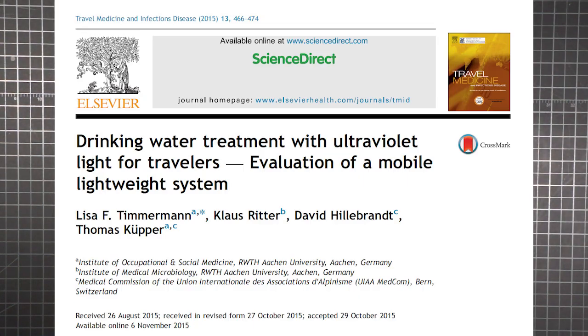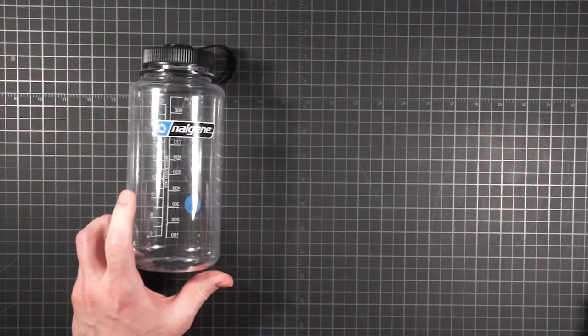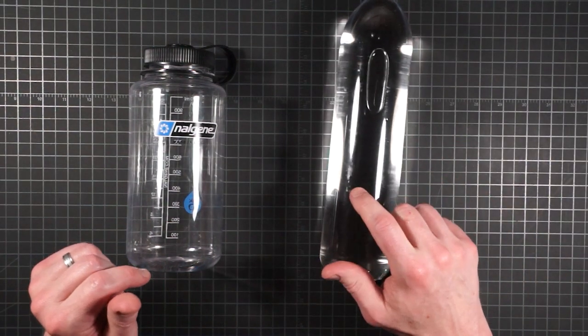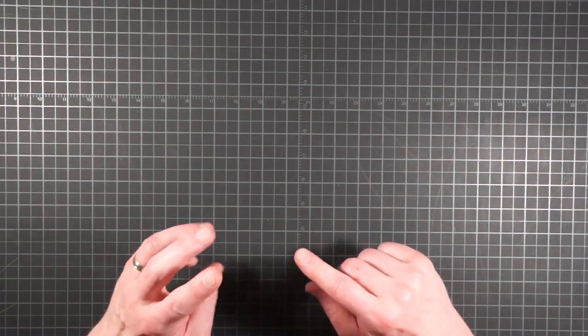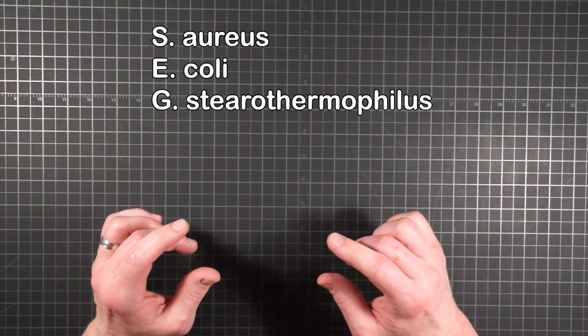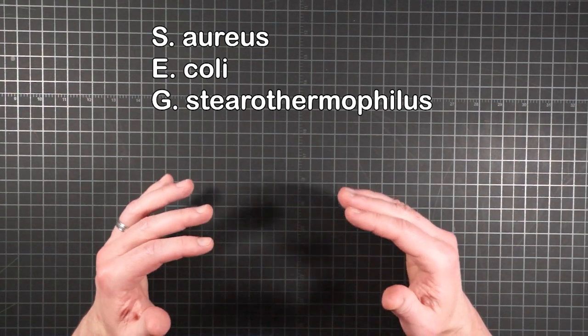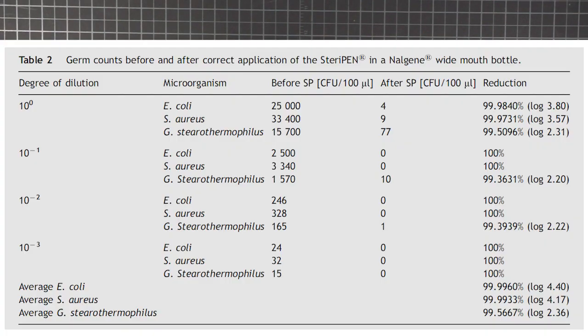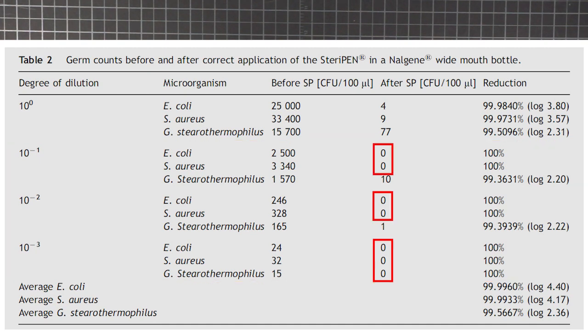The SteriPen has also been the subject of a scientific study published in 2015 in the Journal of Travel Medicine and Infectious Disease. The authors investigated reduction performance using three different bottle types, common to use in the outdoors. They did a wide mouth Nalgene, an aluminum bottle, and a typical PET plastic disposable, similar to the popular smart water bottle. All had a capacity of one liter. Using the Nalgene, they tested against three different microorganisms. Staphylococcus aureus, the stuff that causes staph infections, and E. coli are bacteria, while the last one is a bacterial spore. At lower concentrations, none of the bacteria remained viable, and some of the spores did. But you can't really calculate a log reduction if the results are zero.